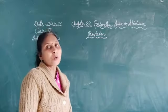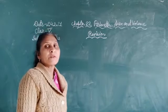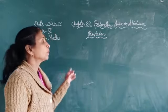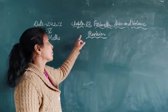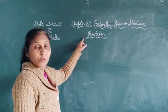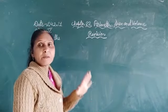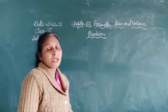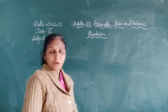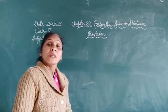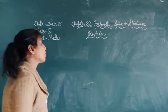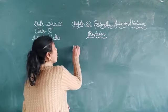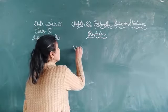Good morning students. Today we will continue the revision of chapter 22, Perimeter, Area and Volume. We will discuss the volume of a cube.